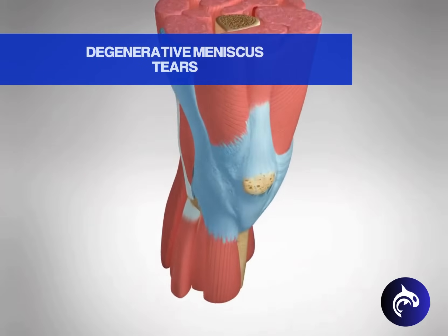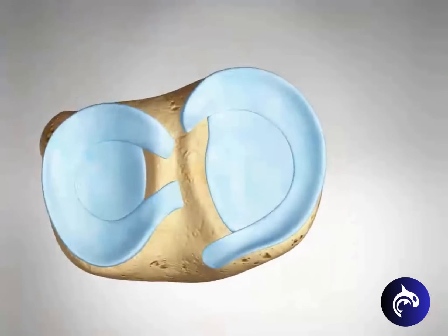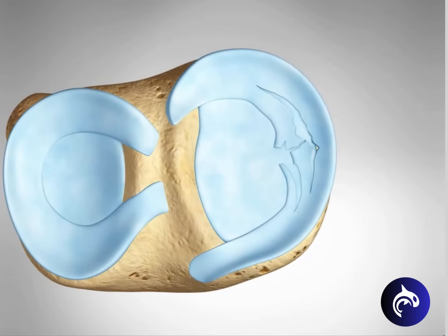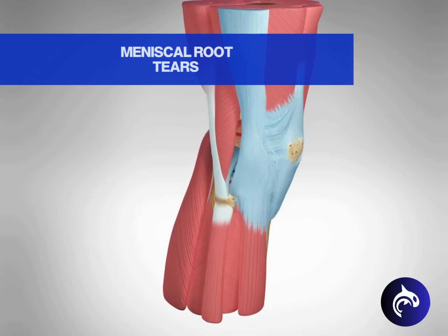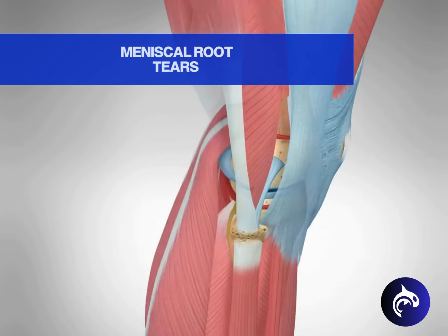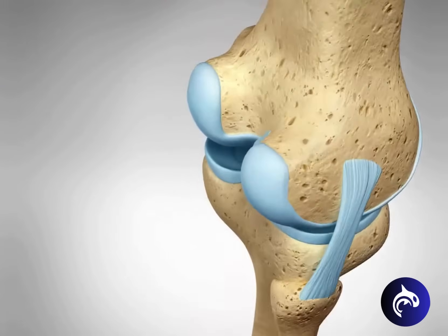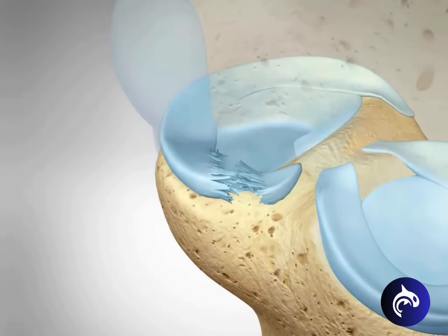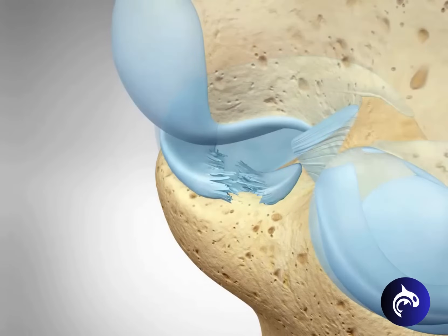Degenerative tears occur with age and wear. They usually consist of fraying and small accumulated tears. Most people develop degeneration at some level, but it isn't always symptomatic. A root tear occurs at the meniscal root, where the meniscus attaches to the tibia. This type can significantly affect the stability of the knee joint.